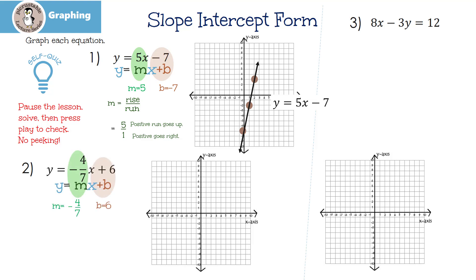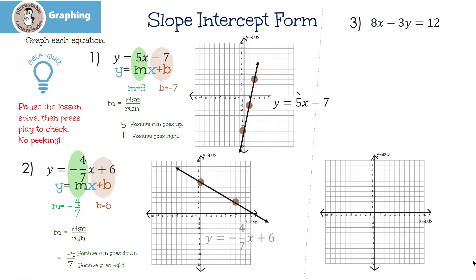Let's look at number 2. Our slope for number 2 is negative 4-sevenths, and our y-intercept is 6. We're kind of lucky here because our slope is already a fraction: negative 4 over 7. Remember, I like to put the negative in the top, but you only get one placement — either in the top or the bottom, but not both. That means I'm going to go down 4 in the negative direction, and then run 7 to the right. Here's my y-intercept 6 — I'm going to go down 4: 1, 2, 3, 4, and then run 7: 1, 2, 3, 4, 5, 6, 7. We draw the line and then label it.